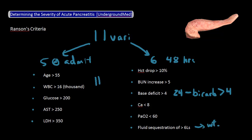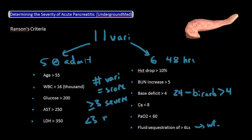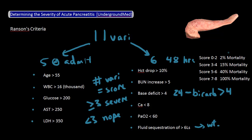What you want to do now is count the number of variables that are met, and this is equal to your score. A score greater than or equal to 3 means that you probably have severe pancreatitis, and a score under 3 means that severe pancreatitis is unlikely. There are also mortality estimates based on a patient's score, which I'll list for you here. A score between 0 and 2 is associated with a 2% mortality, and a score between 7 and 8 has a 100% mortality associated with it, with everything else in between.